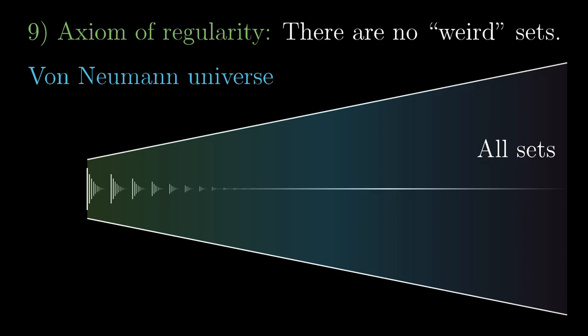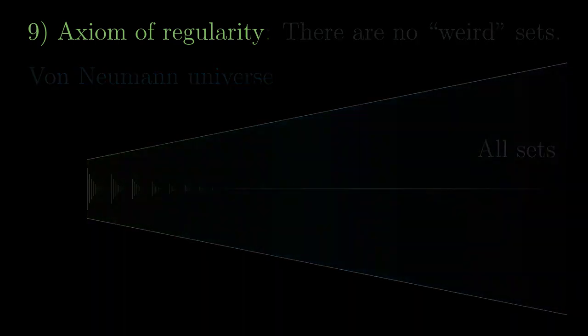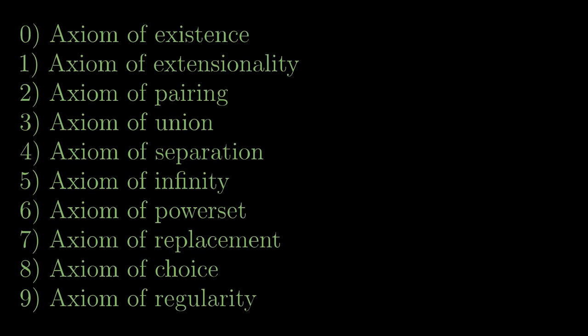It has already taken longer than I would like to. In the end, try to pause the video, look at the list of the axioms we have just discussed and recall what are the axioms responsible for. As the most important axioms, I would personally pick extensionality, union, infinity, powerset, replacement and choice, also because all the other axioms except regularity could be derived from them.